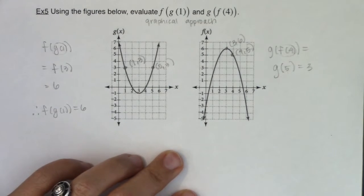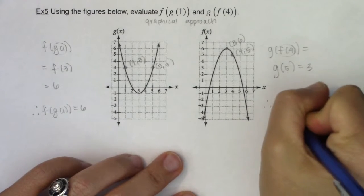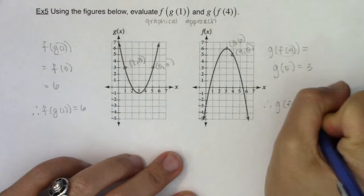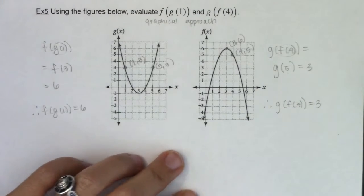And that's it. That's my answer. So I've figured out that g of f of 4 is equal to 3.